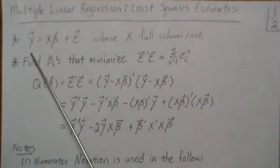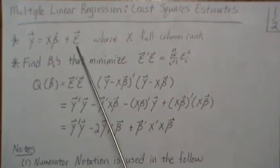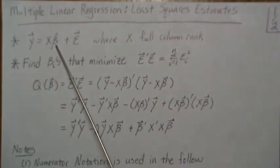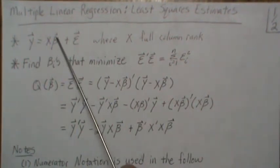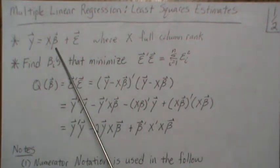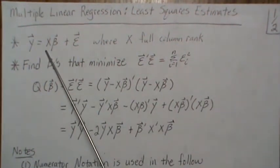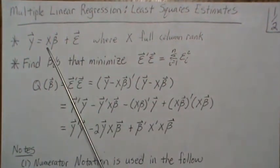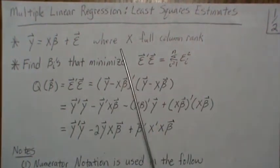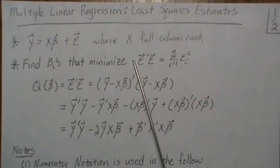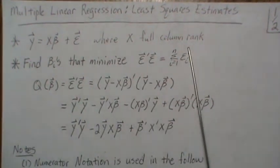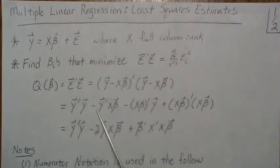So these are n by 1 vectors; this is an n by 1 vector; this is beta 0, beta 1 through beta k, so it's a k plus 1 by 1 vector; and this is the data matrix which is an n by k plus 1 matrix. We are assuming that X is full column rank, so it has a rank of k plus 1.